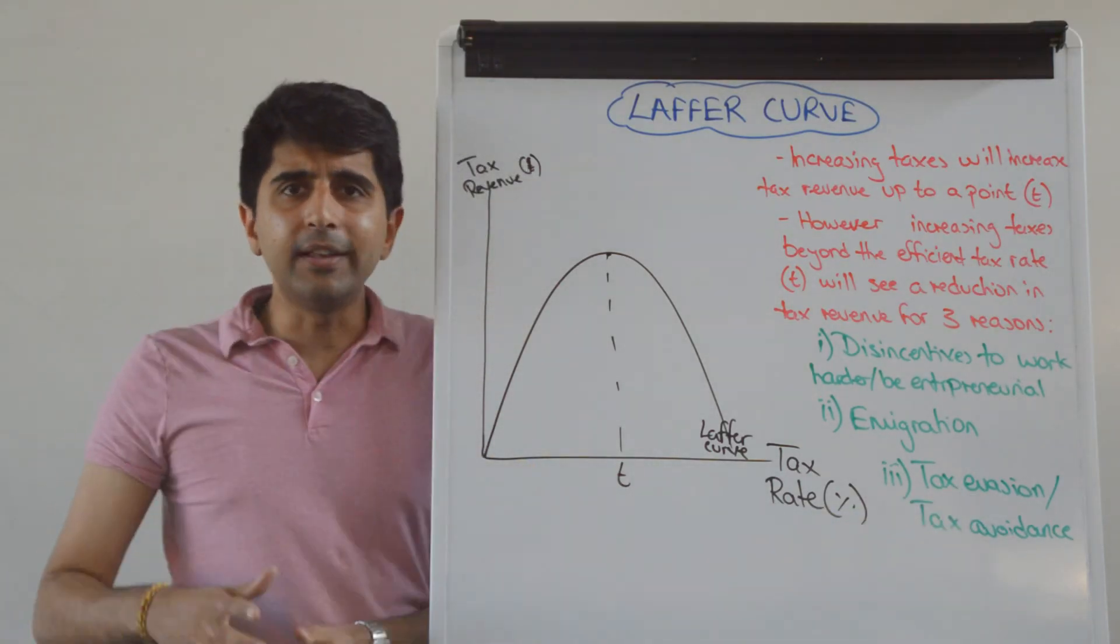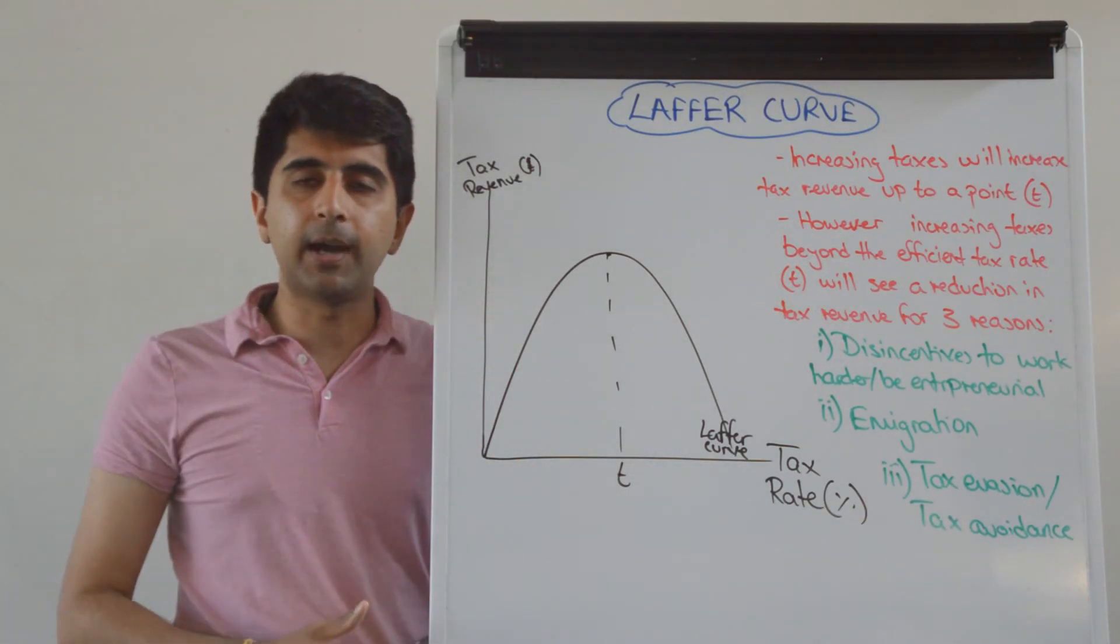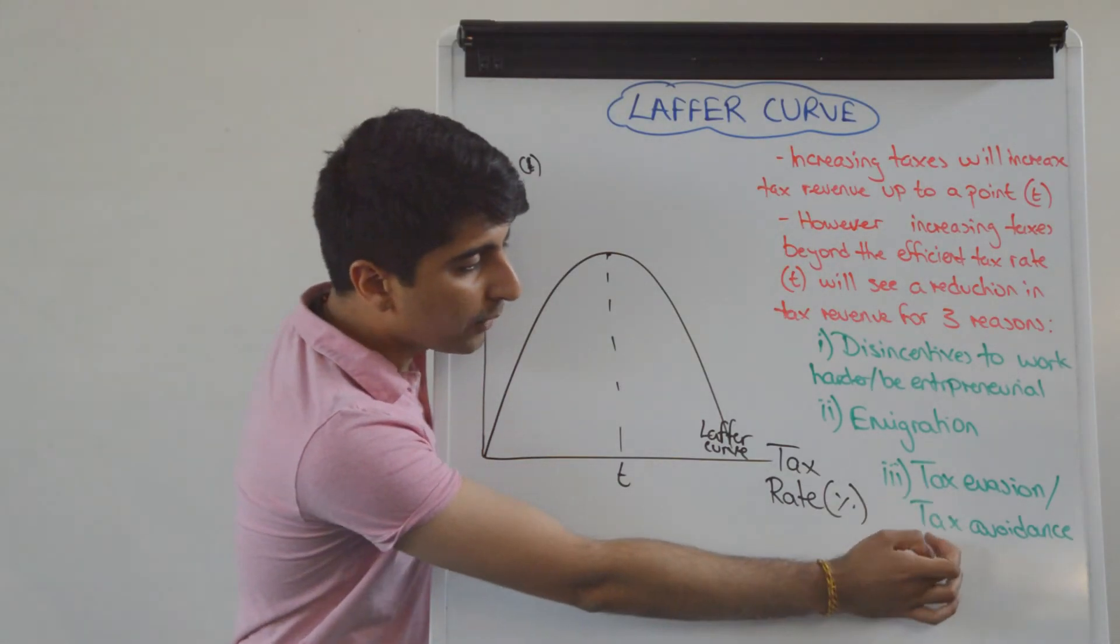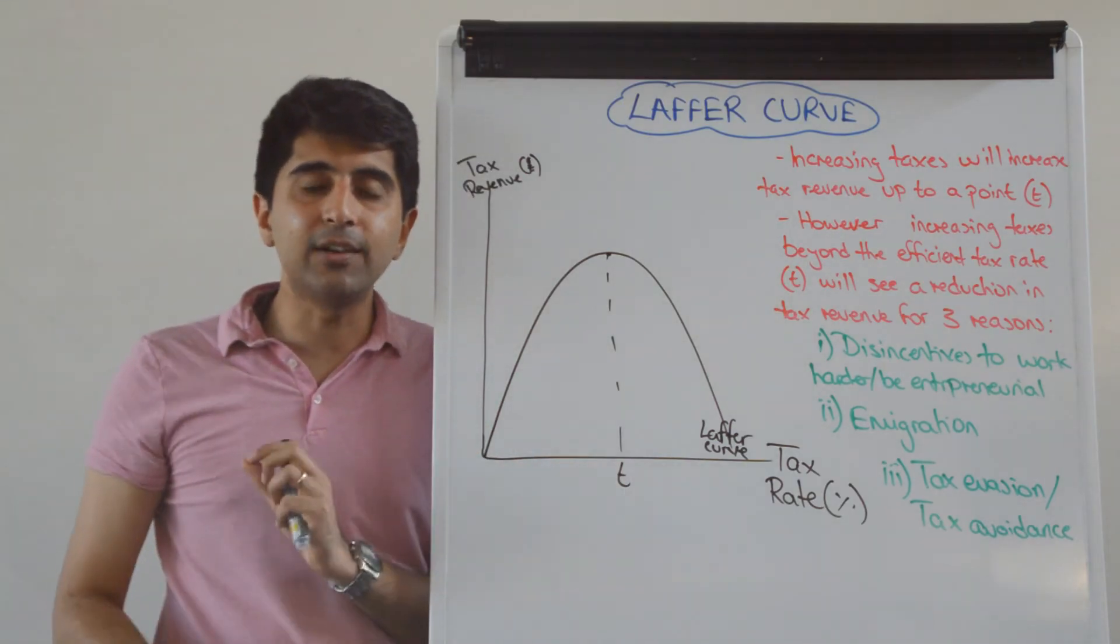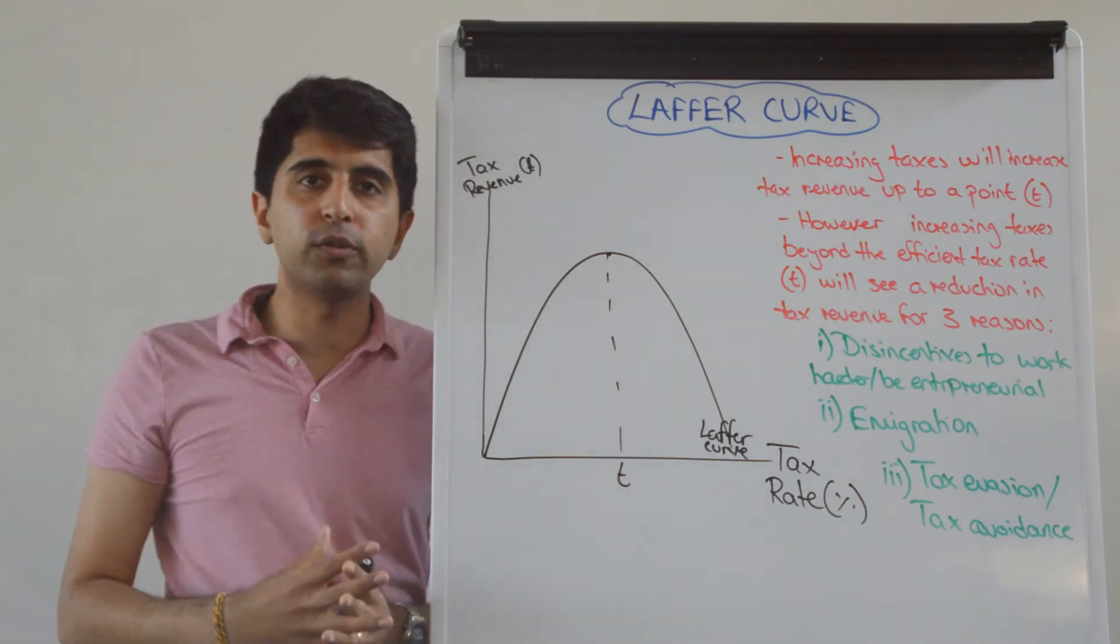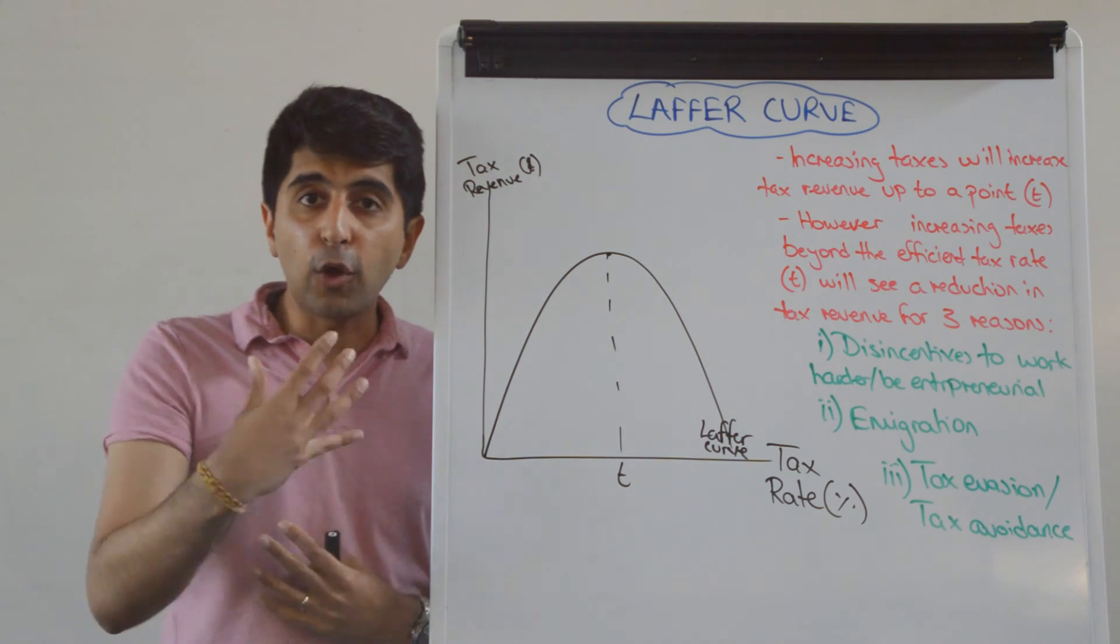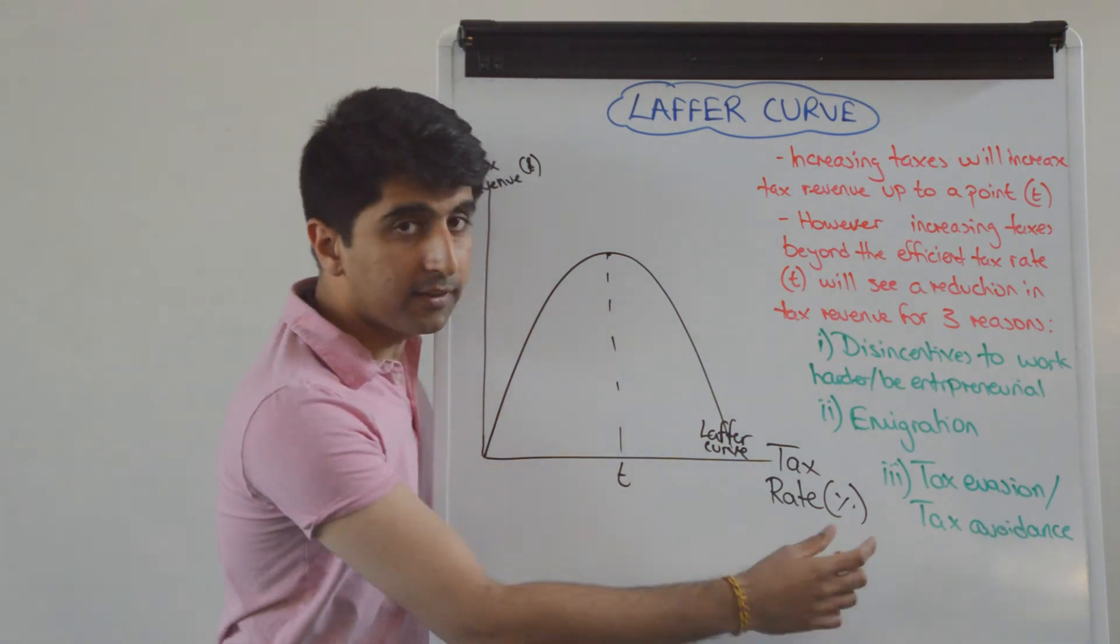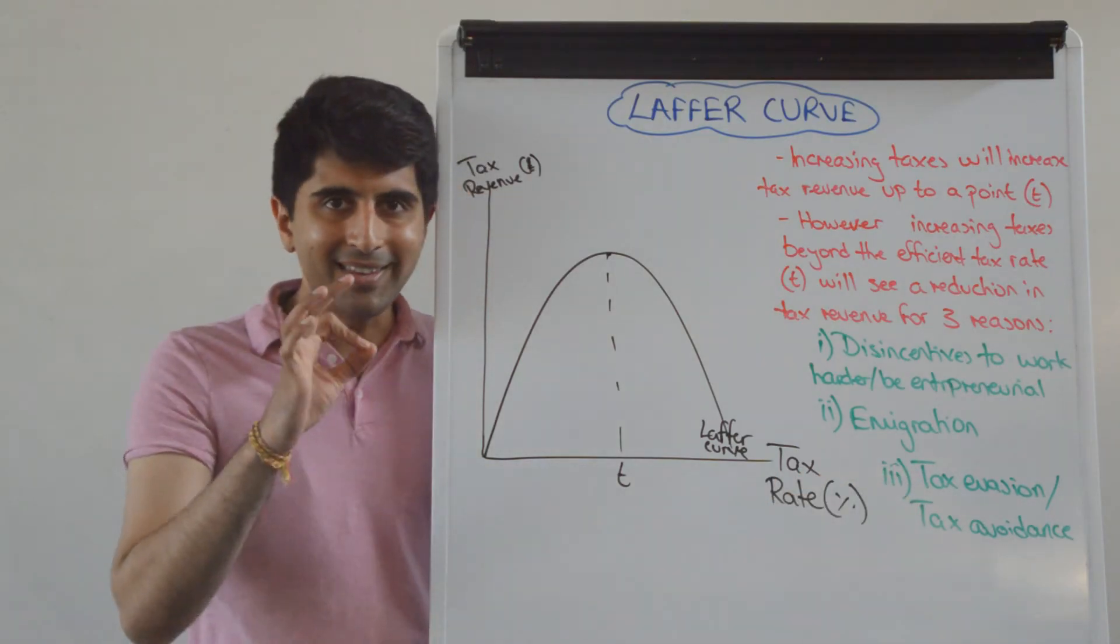Tax evasion is simply not declaring all of your income, and that is illegal. That means obviously you're not going to pay as much tax. That is illegal, whereas tax avoidance is legal. Tax avoidance is finding loopholes in the tax system whereby you don't pay as much tax as you would otherwise. So tax avoidance is legal, tax evasion is illegal.